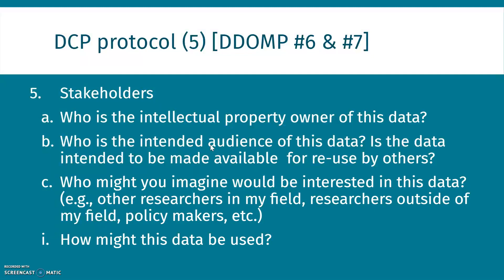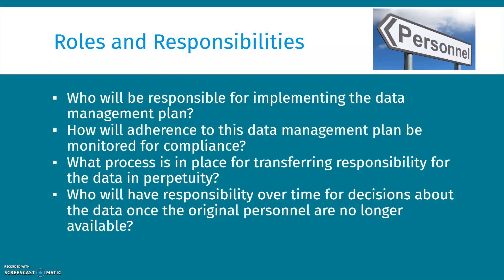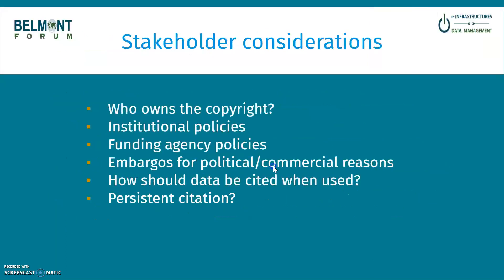For the DCP protocol number five, it maps really well to the DDOMP number six and number seven. This is stakeholders. Who is the intellectual property owner of this data? Who is the intended audience? Is the data intended to be made available for reuse by others? Who might be interested in this data, and how might it be used? For roles and responsibilities, personnel have to be assigned: who will be responsible for implementing the data management plan, how will adherence be monitored for compliance, and what process is in place for transferring responsibility for the data in perpetuity? Who will have responsibility over time for decisions about the data once the original personnel are no longer available?